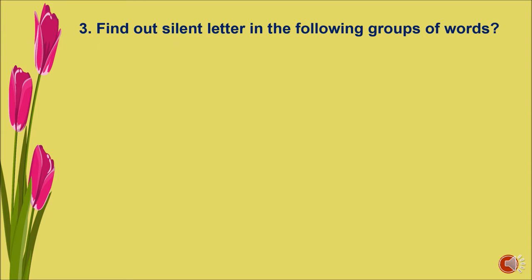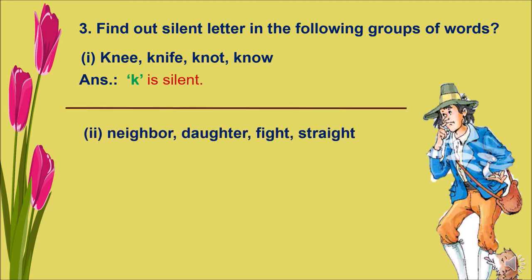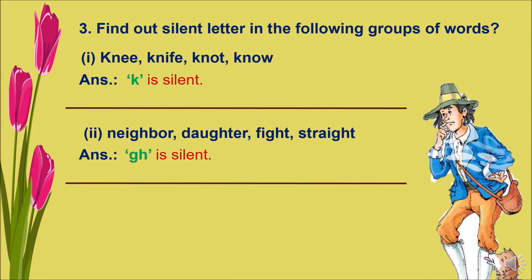Now observe these words — when we pronounce them, there is one letter which is always silent. The silent letter is K — in all these words, K is silent. Then for the words neighbor, daughter, fight, and straight, the silent letter is GH. For the words honest, honor, our, and hair, the silent letter is H.